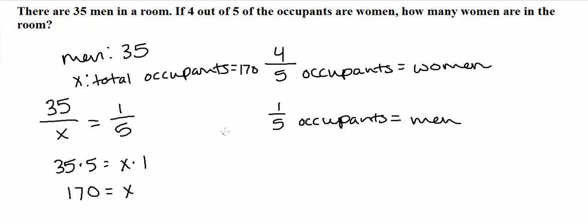So now revisiting what the question asks for, the question actually asks for how many women are in the room. So now all we have to do is take our total of 170, and we have to subtract the number of men. So 170 minus 35 is going to give you...oh,